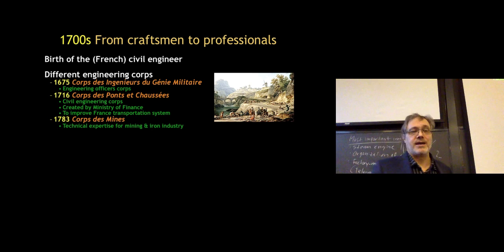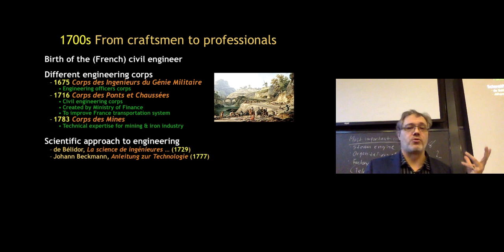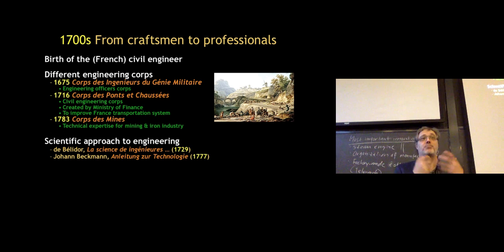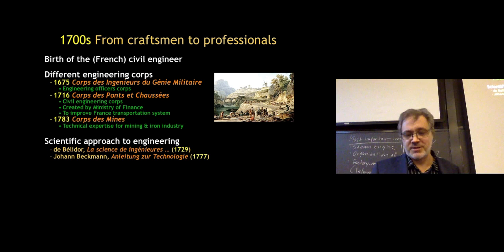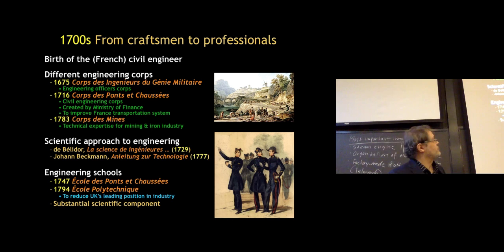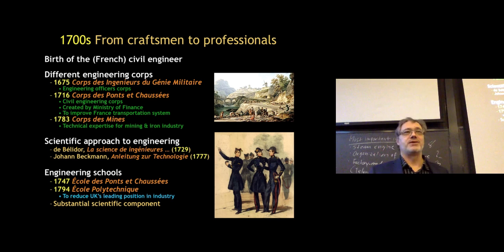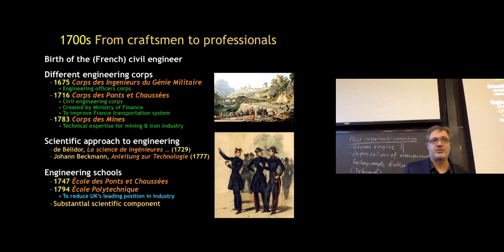In 1783, the Corps des Mines was set up, focusing on mining and the iron industry. What came with these new corps was also a view that engineering should be more scientific, very much connected to the French tradition emphasizing the role of mathematics. Works in French and German were trying to mathematize and systematize engineering. In 1747, the École des Ponts et Chaussées was established to train people for the engineering corps. Then came the École Polytechnique — partly set up to counter the United Kingdom's leading industrial position, which was seen as a threat to France.